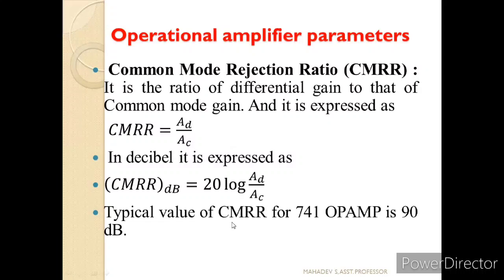Now let us study the operational amplifier parameters in detail. The first concept is Common Mode Rejection Ratio (CMRR), defined as the ratio of differential gain to common mode gain: CMRR equals AD by AC, where AD is differential gain and AC is common mode gain. It is called a rejection ratio because when common inputs are given, the output becomes almost 0 — it rejects common signals while amplifying differential signals. It is expressed in dB and the ideal value for the µA741 op-amp is 90 dB.